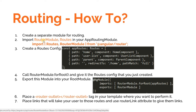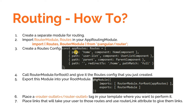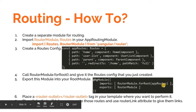We'll create an App Routing Module and import the Router Module that Angular ships with, along with Routes from the angular/router package. Then we'll create a configuration with objects having keys — path and component. The path key specifies the route, and the component key specifies which component to load for that route. Once we define this configuration, we call the forRoot() method on the Router Module and pass it this configuration as an argument.